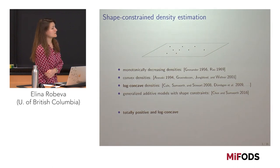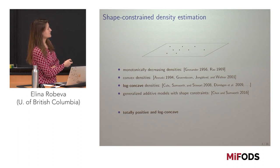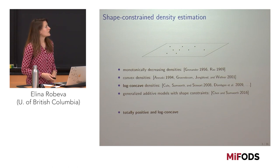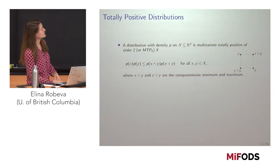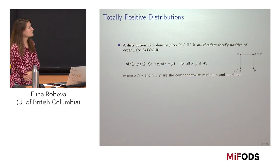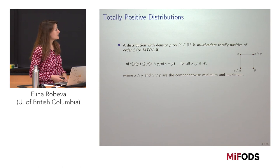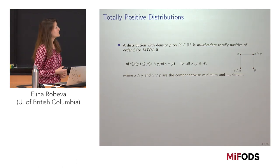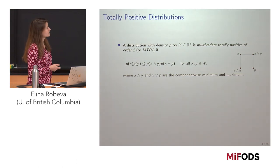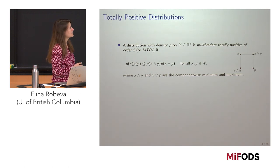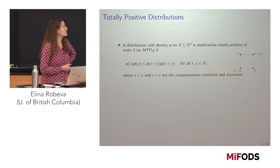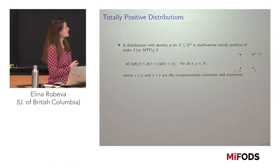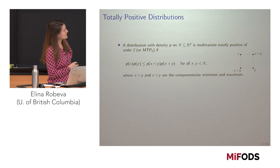Today I'll tell you about totally positive and log-concave densities. In particular, I'll also tell you a lot about log-concave density estimation because it's going to be part of our assumption as well. A distribution with density P on a subset of R^d is called multivariate totally positive of order 2, or MTP2. It satisfies the following constraint: for every two points x and y, P(x) times P(y) is less than or equal to P(x∧y) times P(x∨y), where ∧ is the componentwise minimum and ∨ is the componentwise maximum.